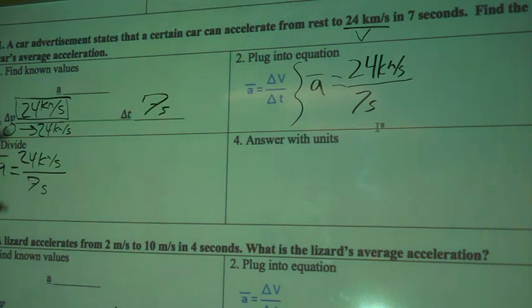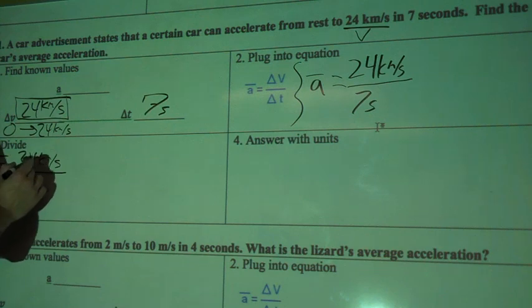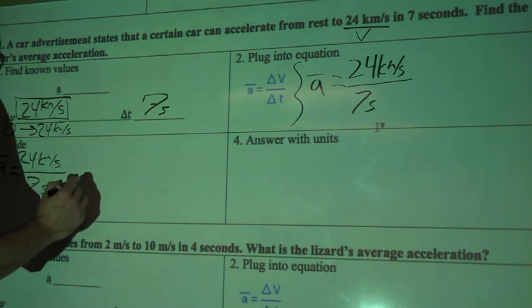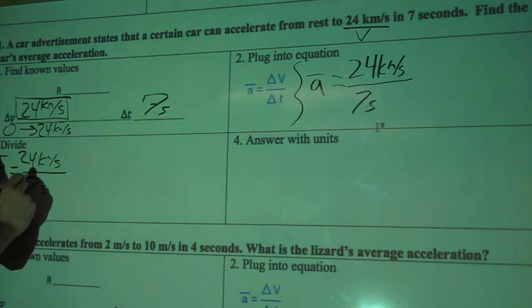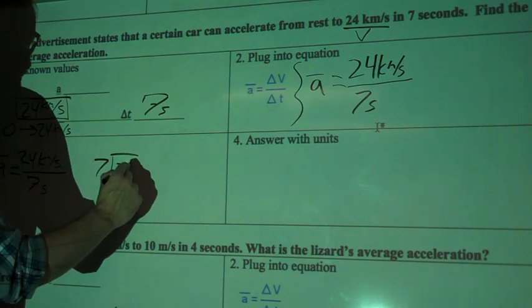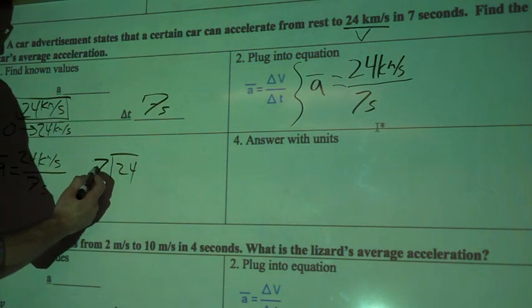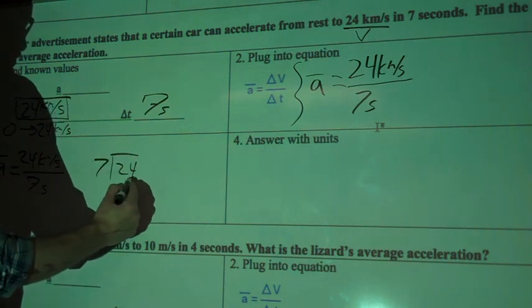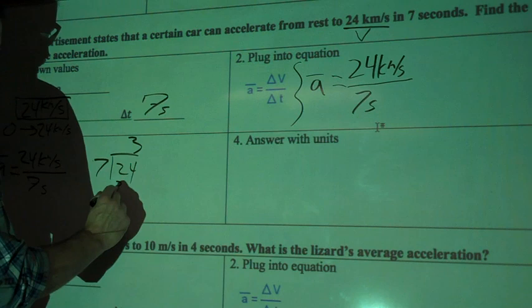Now we have to divide. The first thing that we can do, well, let's divide first. We can deal with these units in a second. So first thing we'll do is we'll divide, we've got 7. How many times 7 is going to 24? So 7 into 24. Okay, so 7 goes into 2, 0 times. 7 goes into 24, let's see, 3 times. That gives me 21.